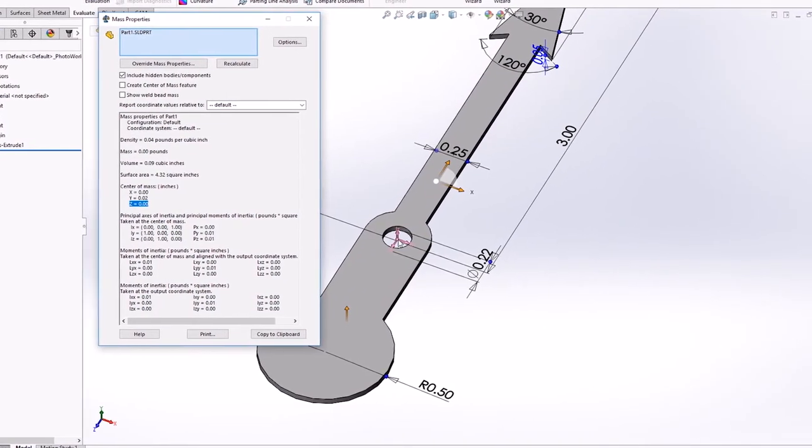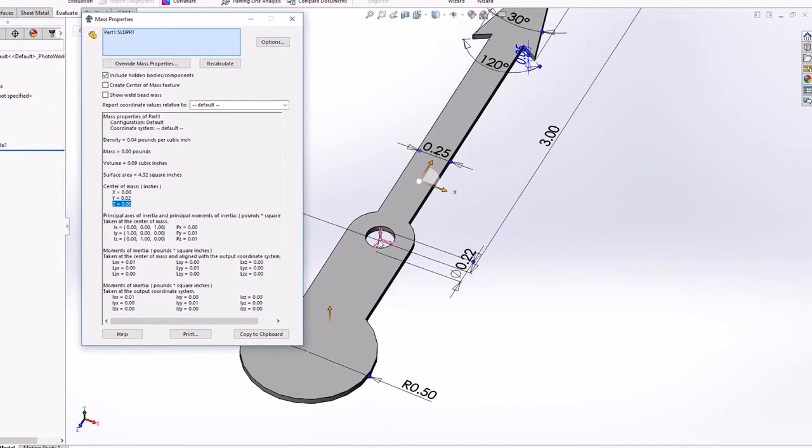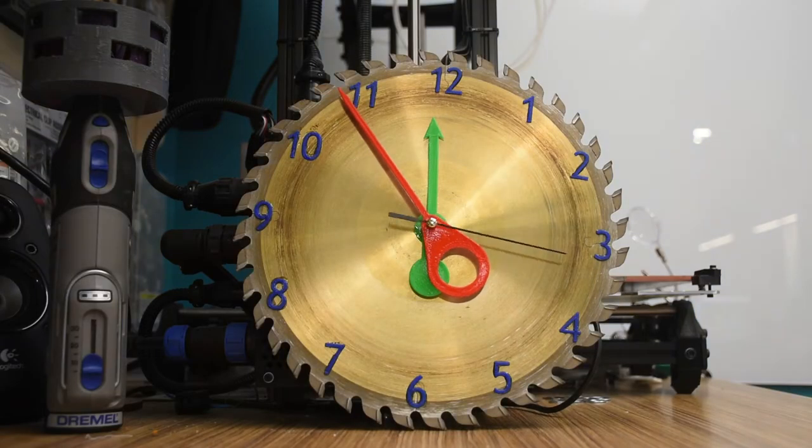The hands don't weigh much, but these little movements don't have much torque, and the hands should be designed to require the least amount of effort to turn. Placing the CG at the axis is ideal.